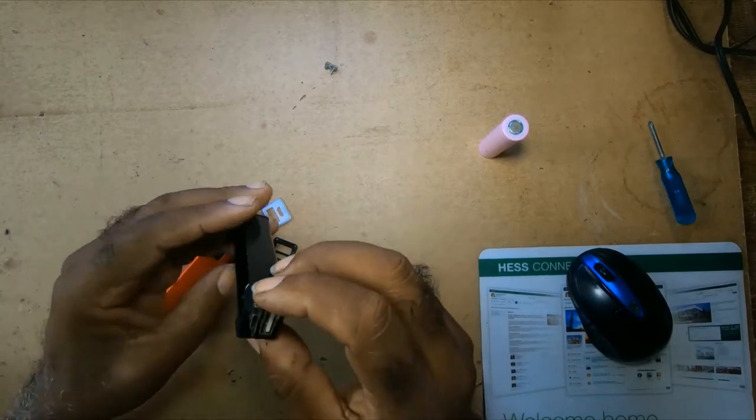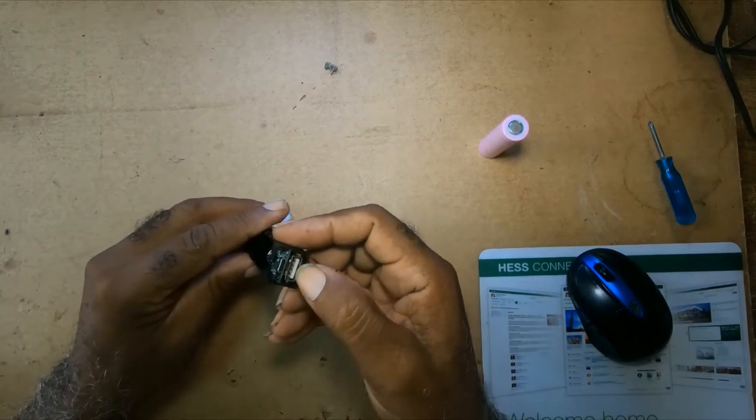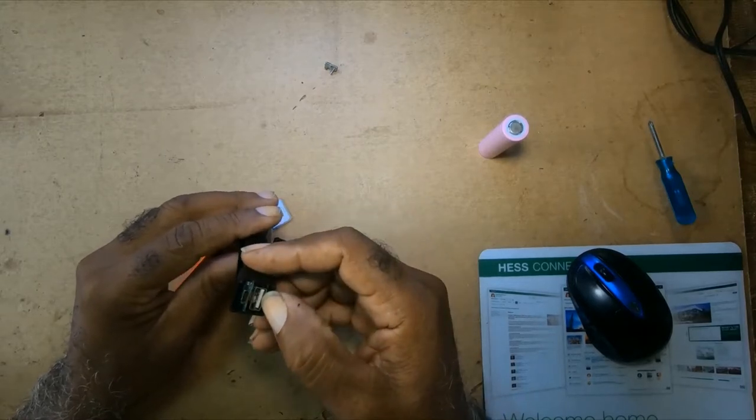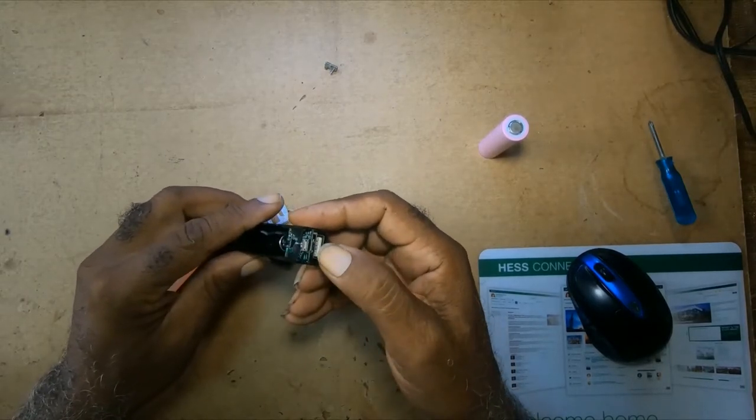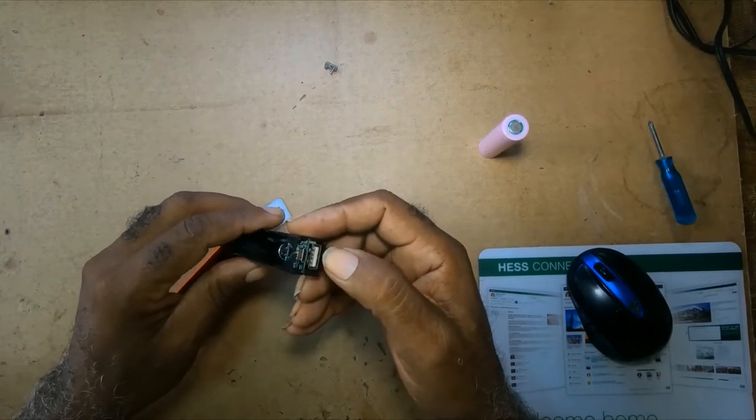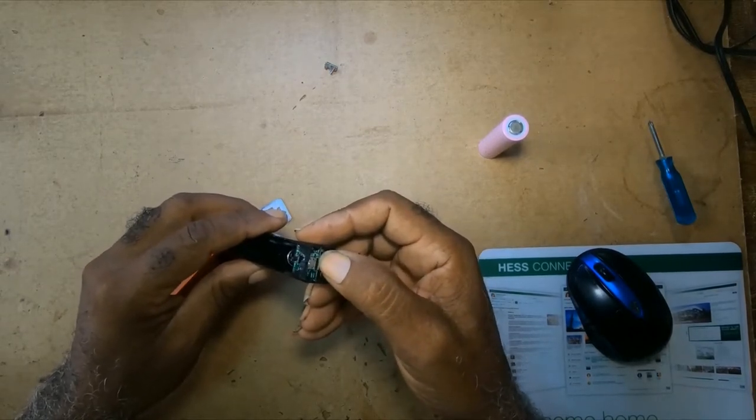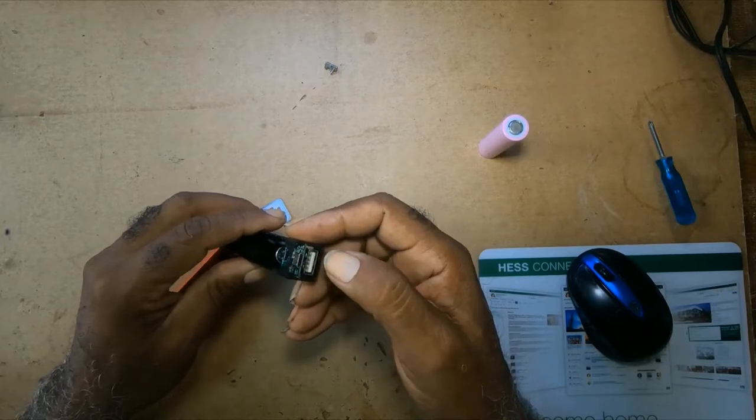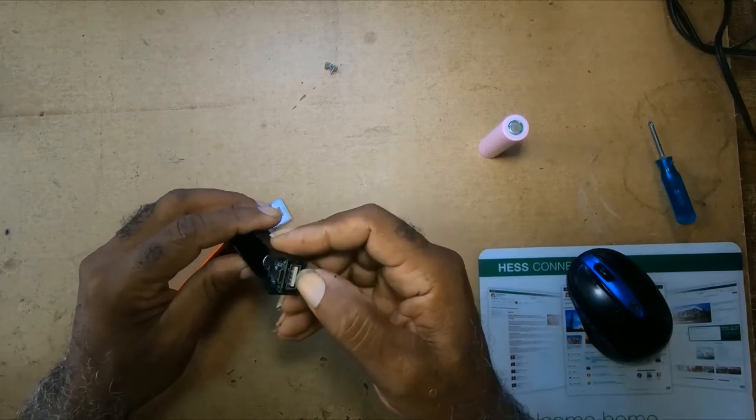Now you have one USB-A female end and one micro USB. The micro USB is for charging, the female end is for discharging. That means charging your battery or whatever.